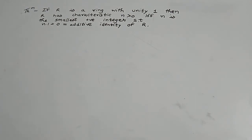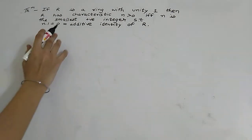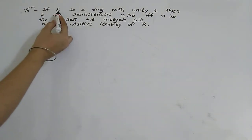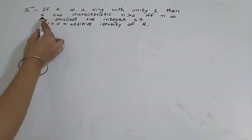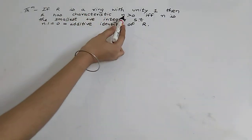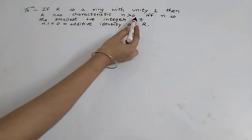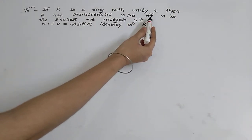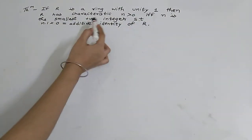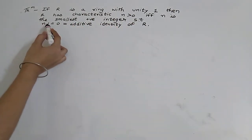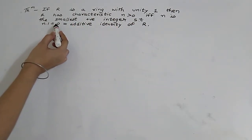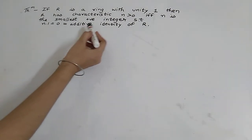Hello friends, welcome to my YouTube channel. In this video we are going to learn one theorem whose statement is: if R is a ring with unity 1, then R has characteristic n greater than 0 if and only if n is the smallest positive integer such that n into 1 is equal to 0, which is the additive identity of R.